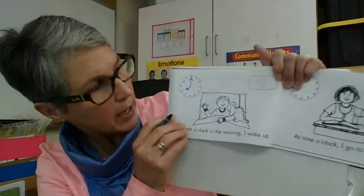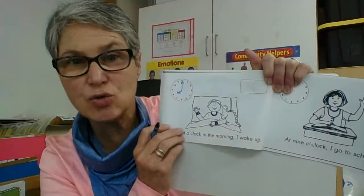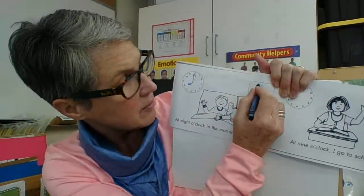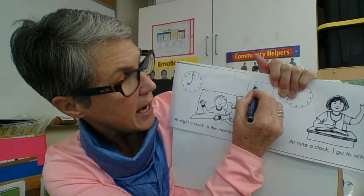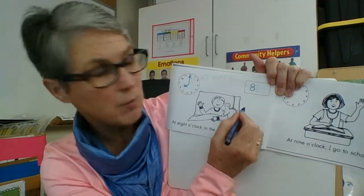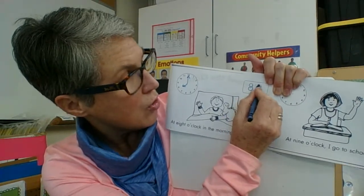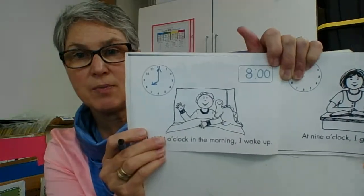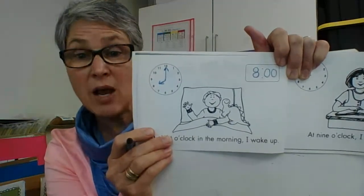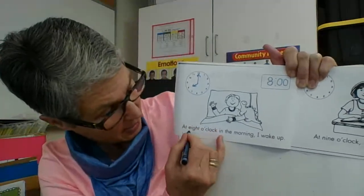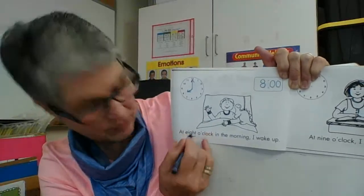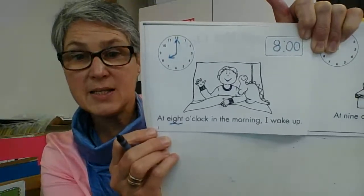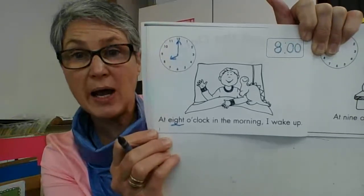I can also see that I need the digital time. So I'm going to put 8 because that's the hour that we're in, and then o'clock — two zeros. So now we know it is 8 o'clock. At 8 o'clock in the morning, I wake up.